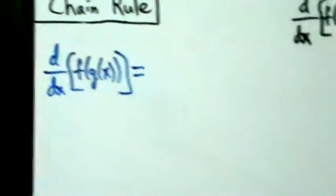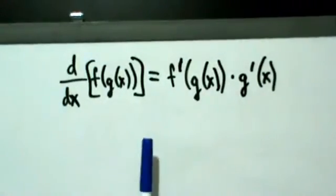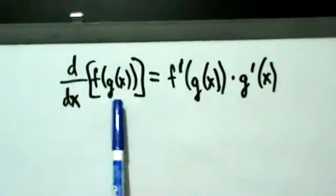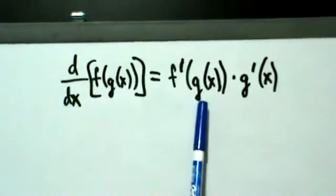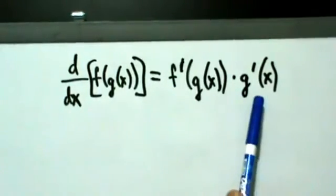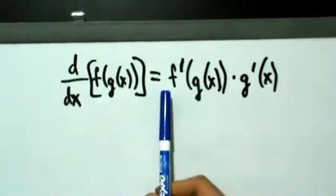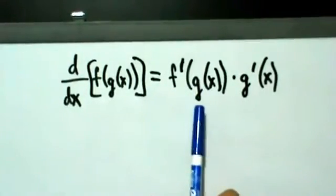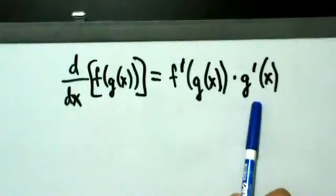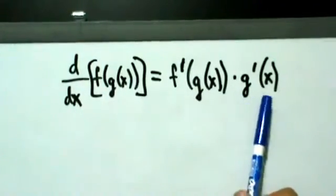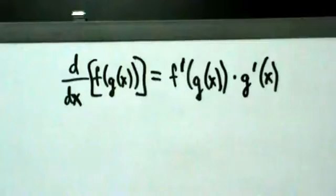We know from the last video that the chain rule says that d/dx of f(g(x)) equals f′(g(x)) times g′(x) — in other words, the derivative of the big guy evaluated at the little guy, multiplied by the derivative of the little guy. That's equal to the derivative of the composite function f(g(x)).